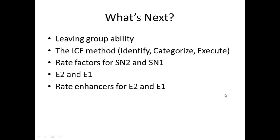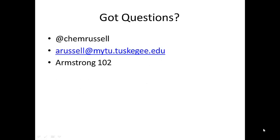We'll continue this topic in steps. Next we'll talk about leaving group ability, then give a way to categorize reactions and quickly determine whether they're SN2 or SN1. We'll cover rate factors — namely the solvent — and then discuss elimination E2 and E1, along with rate enhancers for E2 and E1. If you have any questions, you can tweet, email, or drop by the office.